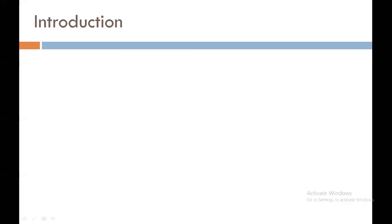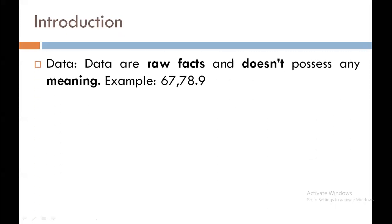Now let's start our session. First of all, introduction of data. What is data? Data means raw facts and it does not have any meaning. For example, any number like 10, 67, 78.9, ABC — these all have no meaning, so they are called data.